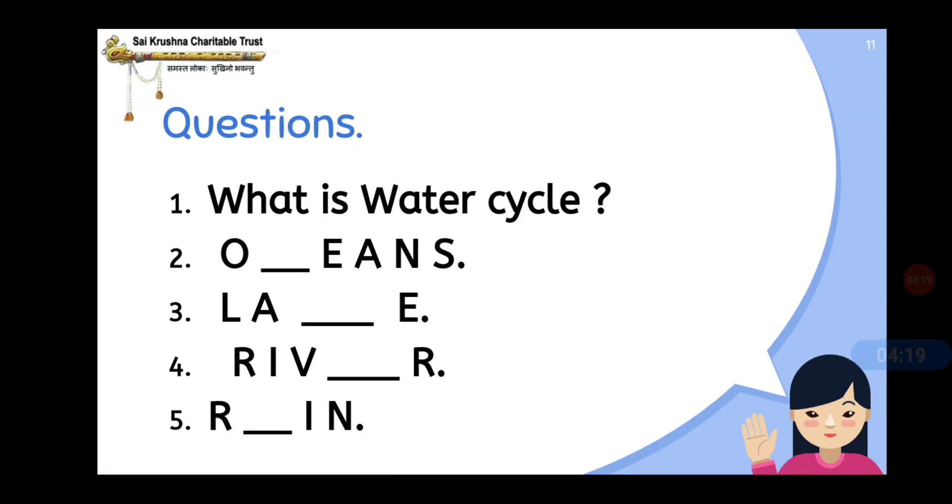Question section: What is water cycle? You have to write - water cycle is a natural phenomenon that maintains the balance of water and causes rain. Second question: O_EANS.